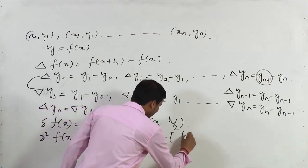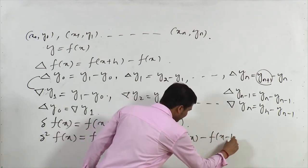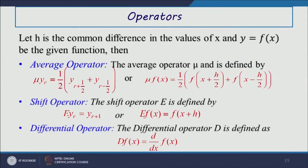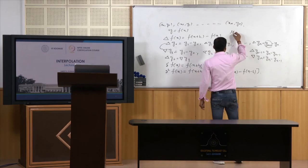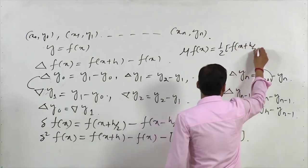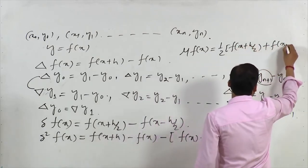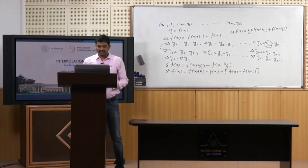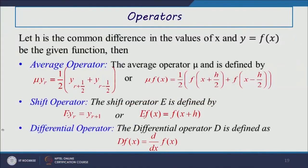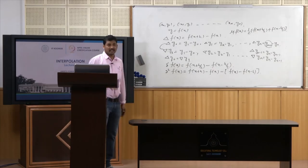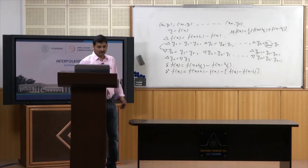The average operator, denoted by mu, is defined as: mu[f(x)] = (1/2)[f(x + h/2) + f(x - h/2)]. In terms of y_r: mu(y_r) = (1/2)[y_{r+1/2} + y_{r-1/2}].